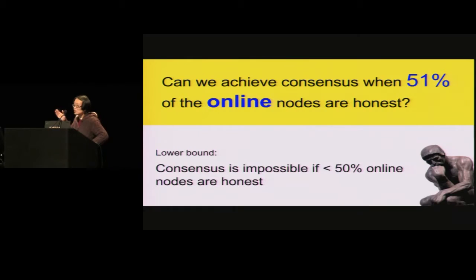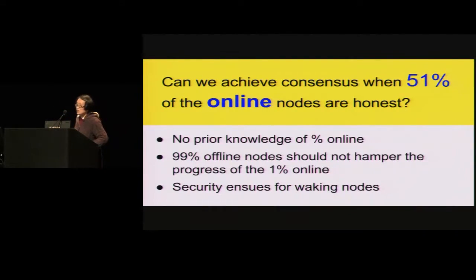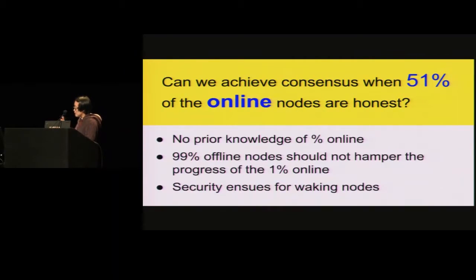This is actually the best you can hope for, because we have a lower bound showing that if among the people who show up, less than 50% are honest, then you cannot hope to reach consensus. We also assume that the protocol cannot anticipate how many people are going to show up — maybe 30% will show up, or maybe just 1%. We want it to be the case that the 99% of people who didn't show up should not hamper the progress of the people who actually do.